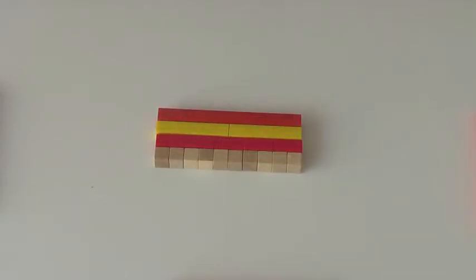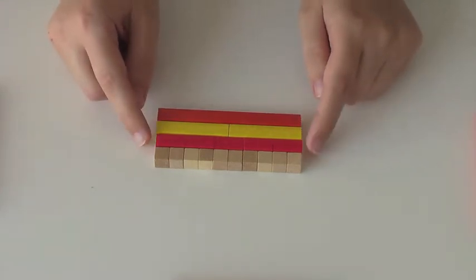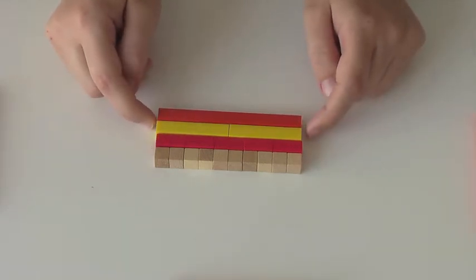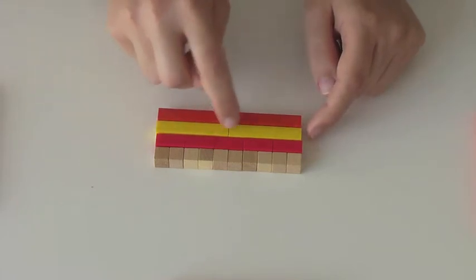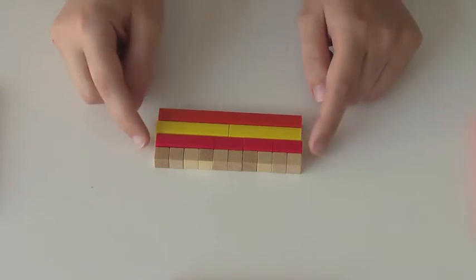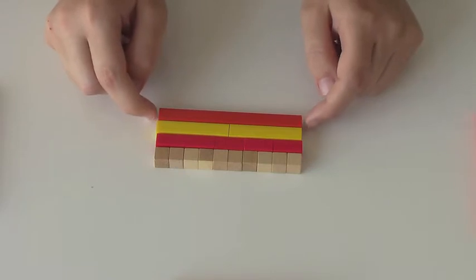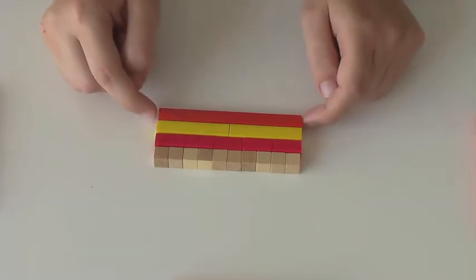Another example: if you have the children pull out a ten rod and ask them to make trains of one single color that will equal ten, they will find that two fives is the same as ten, and five twos is the same as ten, and ten ones is the same as ten. Now this is not only teaching them multiplication but also division, because ten divided by five is two - there are two fives in ten. Ten divided by two is five because there are five of these, and ten divided by one is ten because there are ten of these ones in this one ten.